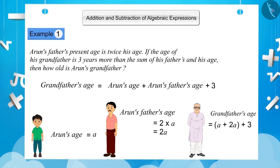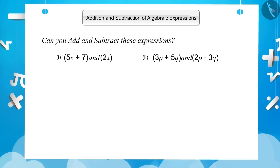In this expression, a and 2a are like terms and 3 is an unlike term. Now, we will add the like terms and get 3a plus 3, which will be the age of Arun's grandfather.